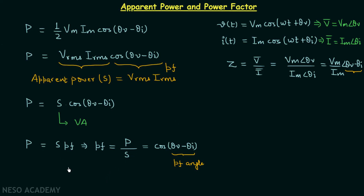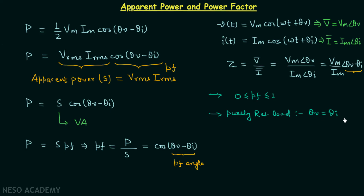The power factor is the factor by which apparent power must be multiplied to obtain average power. The power factor is always less than or equal to 1 and greater than or equal to 0. When we have a purely resistive load, voltage and current are in the same phase, so θv equals θi, meaning the power factor angle is 0. The power factor equals cos(0°) = 1, and therefore the apparent power equals the average power for a purely resistive load.